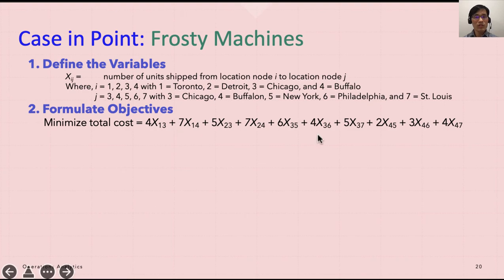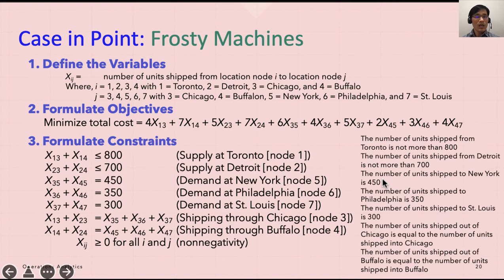For X13 and so forth. And we have to formulate the constraints as well. And if you look at the tables from the previous slide, the supply from Toronto is set as 800. So the supply from Toronto, which is 1, can go to either Chicago or Buffalo. So that's why it has to be less than or equal to 800. And similarly for Detroit, it starts with 2 and it goes to Chicago or Buffalo, has to be less than or equal to 700 because there's a limit in supply.